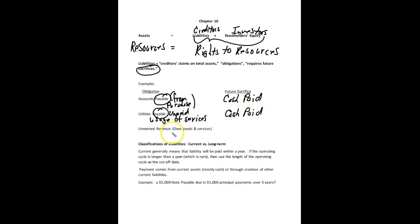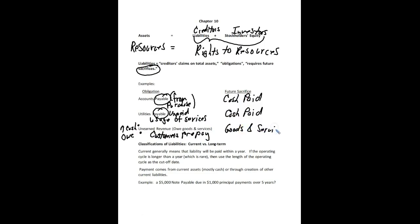Another liability we've covered before is unearned revenue. Here, we don't owe money — we actually owe goods and services. Unearned revenue is created because customers prepay; they pay in advance for goods and services. Cash comes in and we have a liability because we owe the customer goods and services in the future. When we provide those goods and services, we earn our revenue.